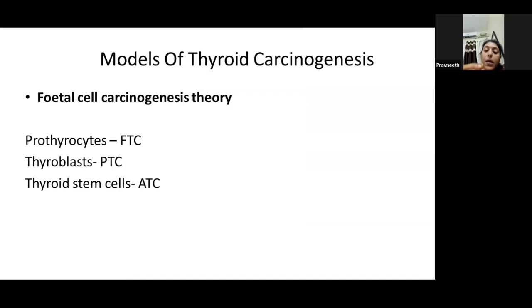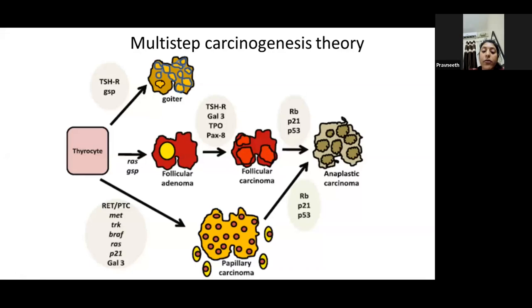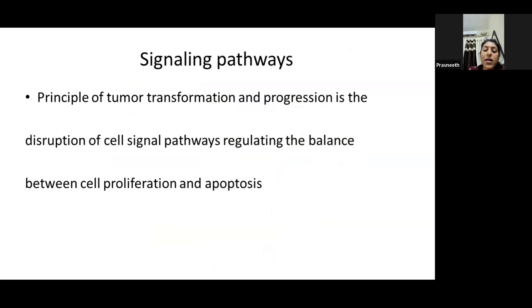The model of thyroid carcinogenesis shows a stepwise progression — from follicular adenoma to carcinoma, then poorly differentiated, then anaplastic. Two proposed theories exist, including the fetal cell theory. The thyrocyte converts to follicular adenoma, follicular carcinoma, and anaplastic. Gene mutations drive each step of this progression. Genes involved include RET/PTC in papillary carcinoma, BRAF, TRK, and MET, tested via molecular testing. In anaplastic or poorly differentiated, p21 or p53 signaling pathways are involved.